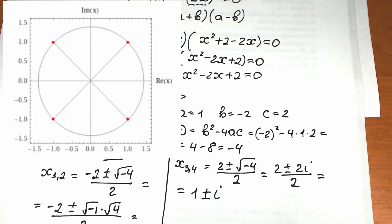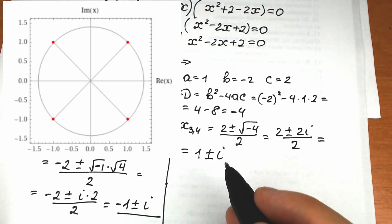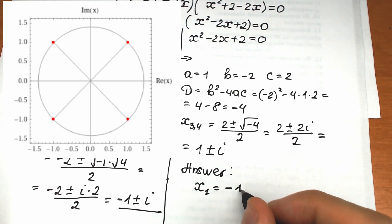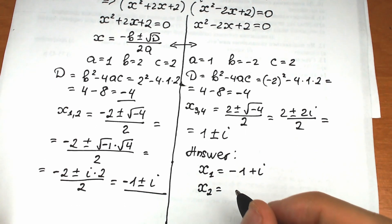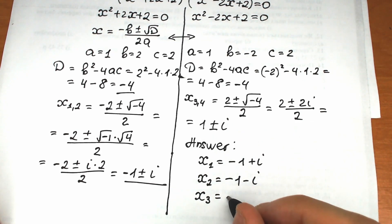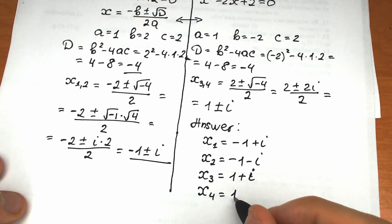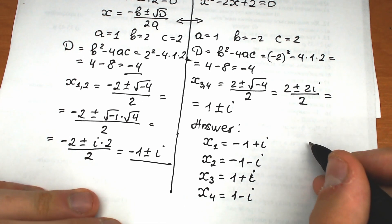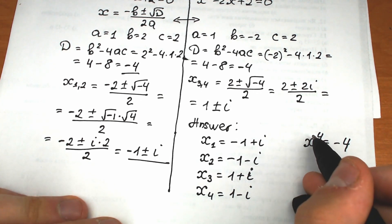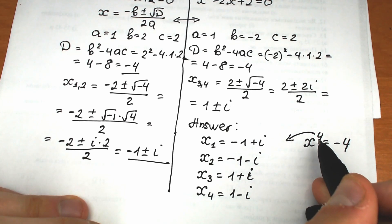So our four complex roots are: x₁ equals minus 1 plus i, x₂ equals minus 1 minus i, x₃ equals 1 plus i, and x₄ equals 1 minus i. You can also see these roots on the complex plane. Since x is raised to the fourth power, we have no more than 4 roots — and we found exactly 4, which is correct.